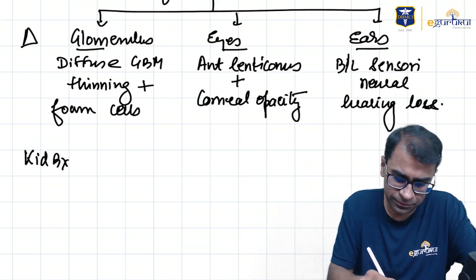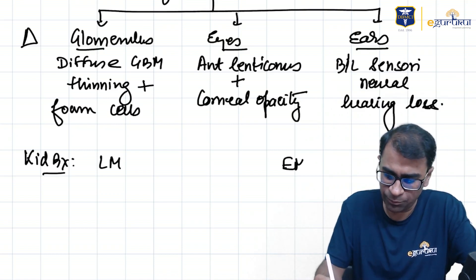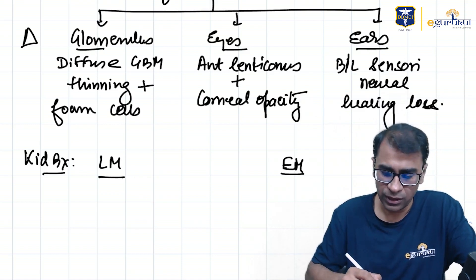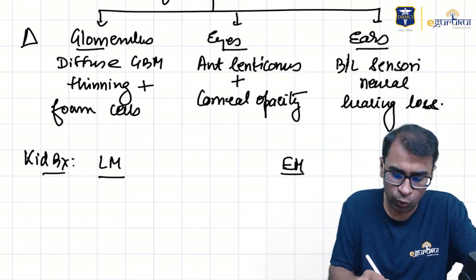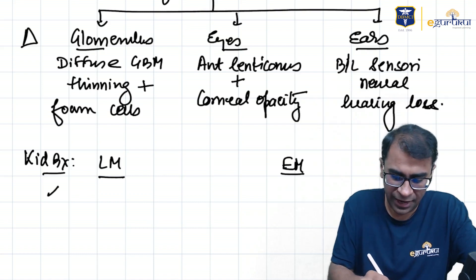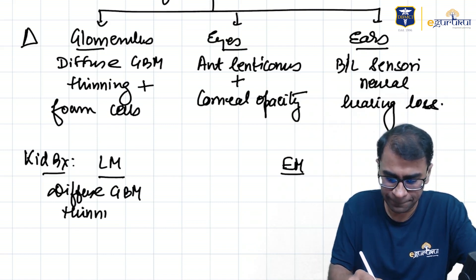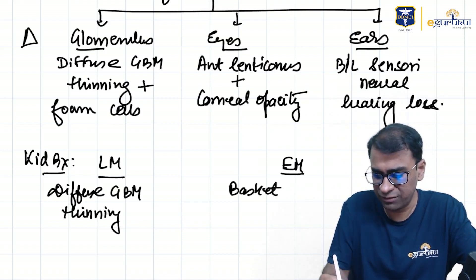The kidney biopsy findings in light microscopy and electron microscopy are important because immunofluorescence microscopy does not show any immune complexes — FM will show no findings. In light microscopy, it shows diffuse GBM thinning and foam cells in the interstitium. In electron microscopy, it shows what is called a basket weave appearance.